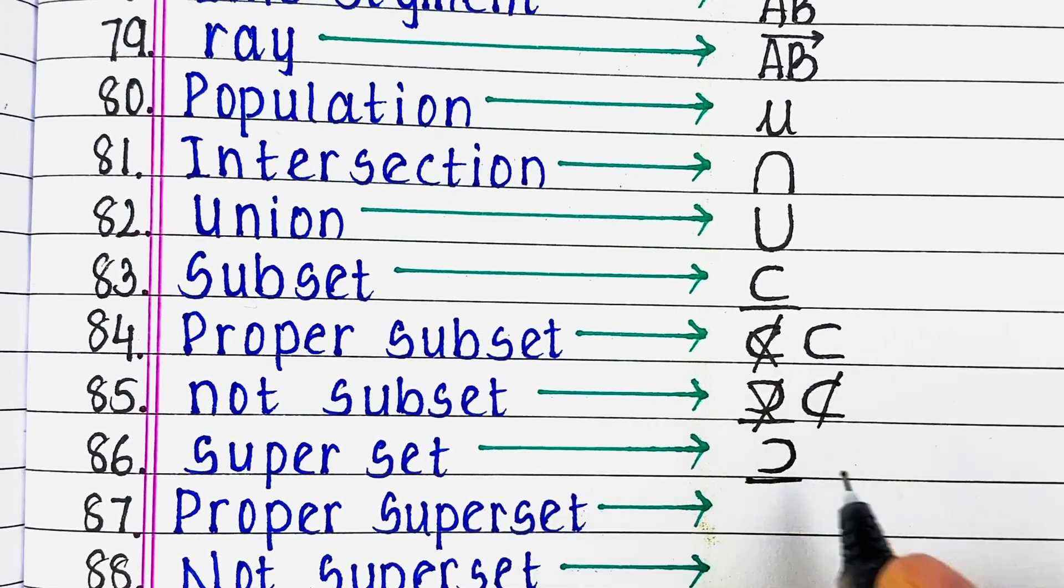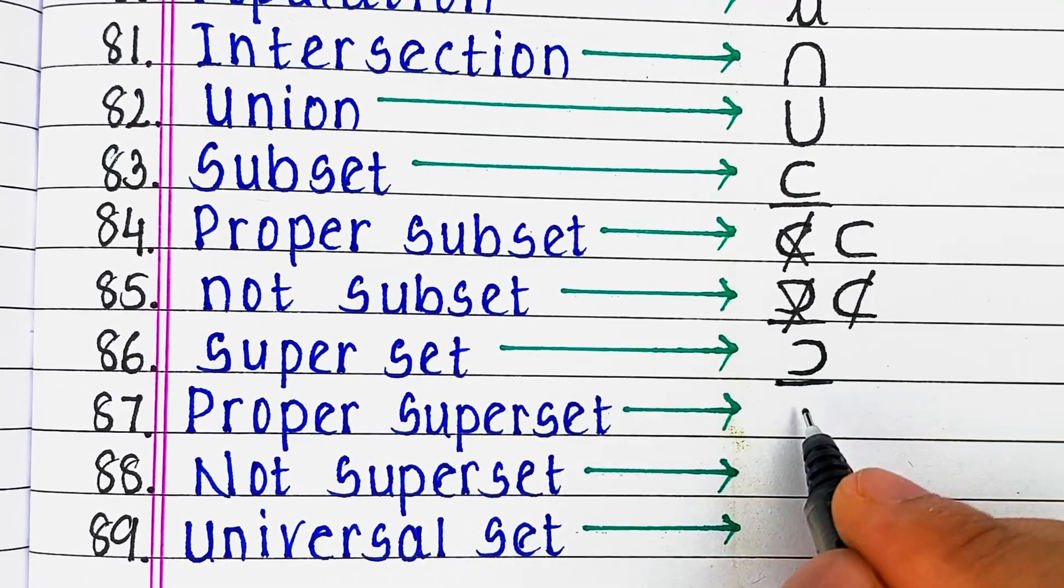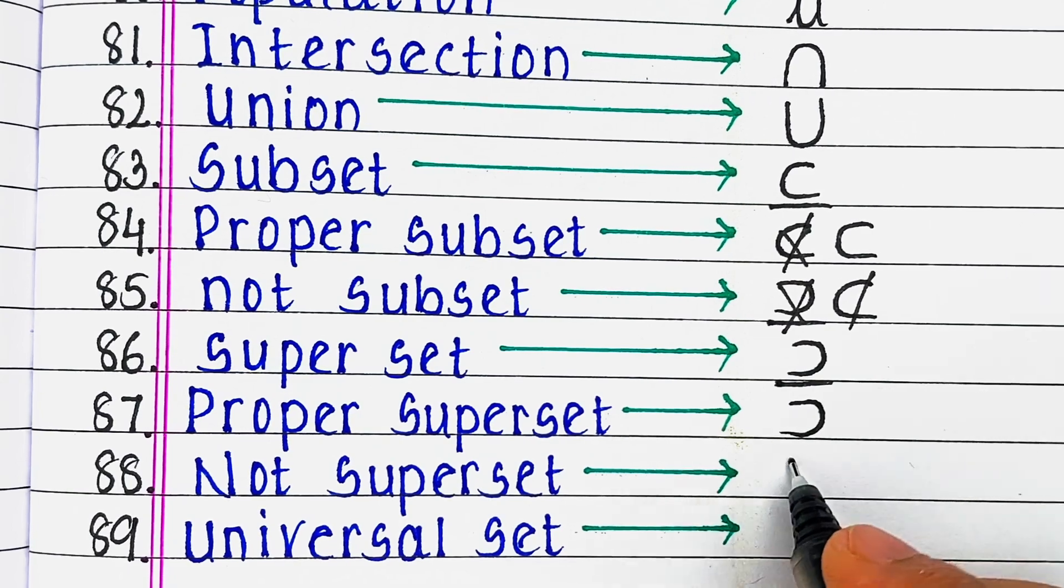Next superset, next is proper superset, next is not superset, next universal set.